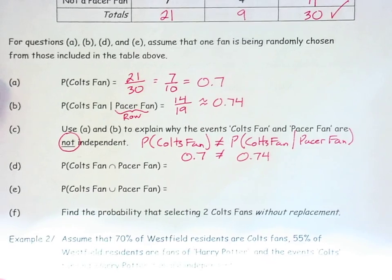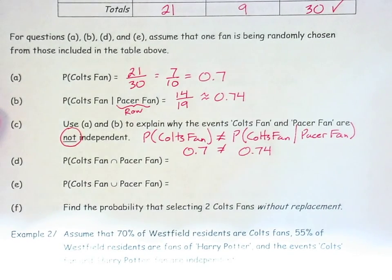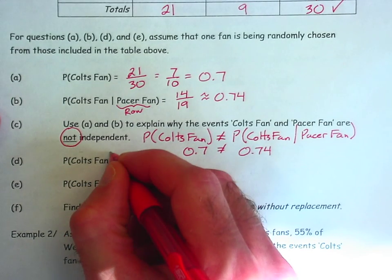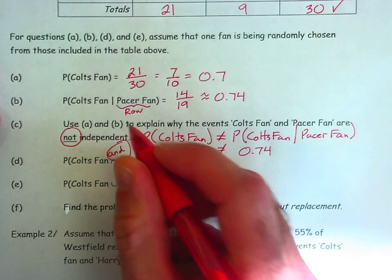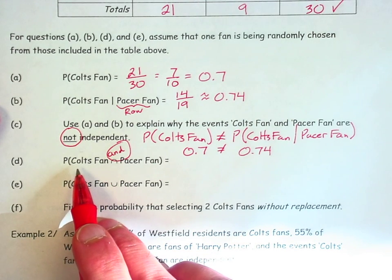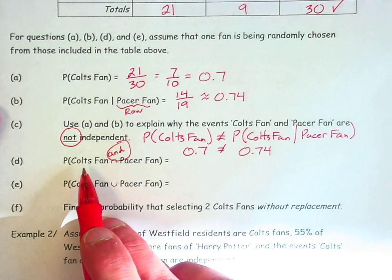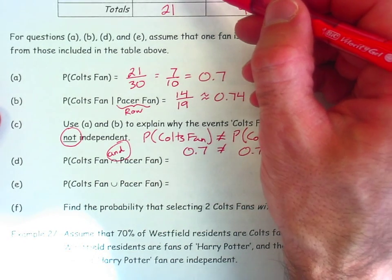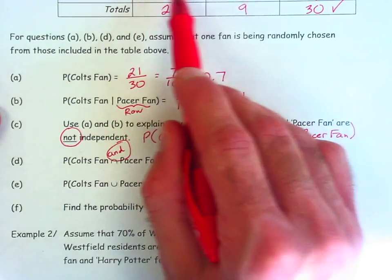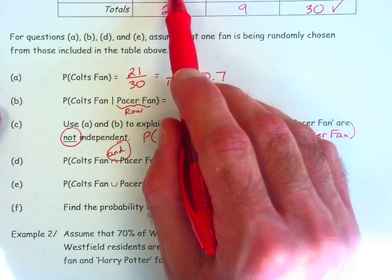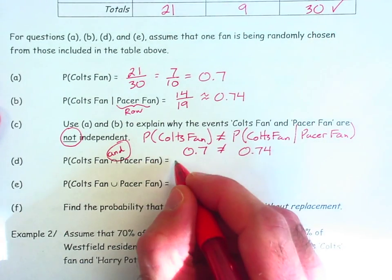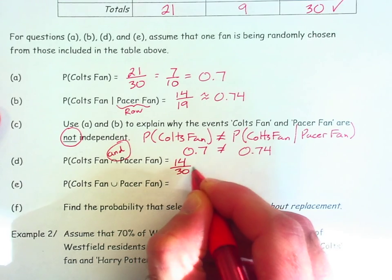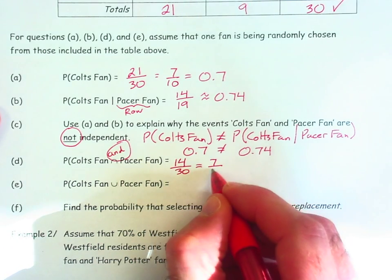So D and E. Question D, this involves an intersection. This is an and question. So the likelihood that someone randomly selected is both a Colts and a Pacer fan. I am looking at the intersection of the Colts fan column and the Pacer fan row. So there are 14 individuals out of a total of 30 I could choose. 14 out of 30. Again, you're welcome to reduce it to 7 out of 15.